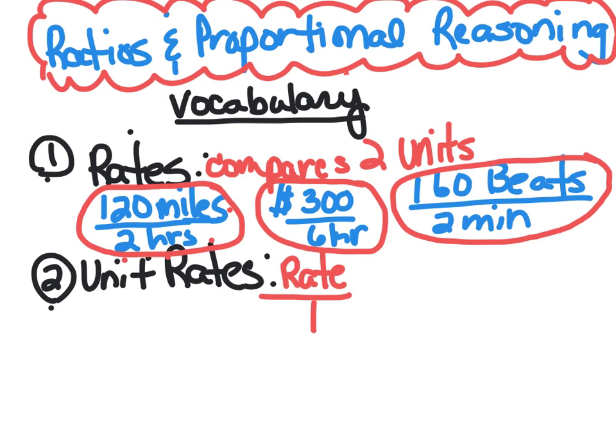They are labeled and the labels have to be different. This is miles per hour - distance and time. This one is money and time, and this one is beats and time. So it is comparing two units and they're set up like a fraction.